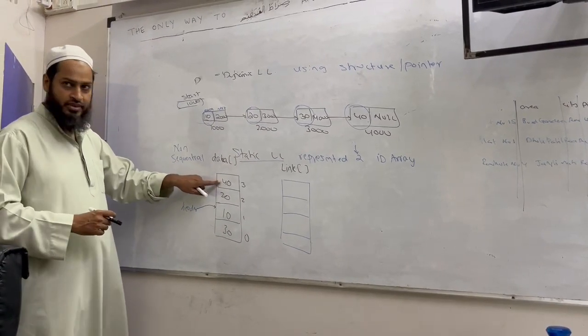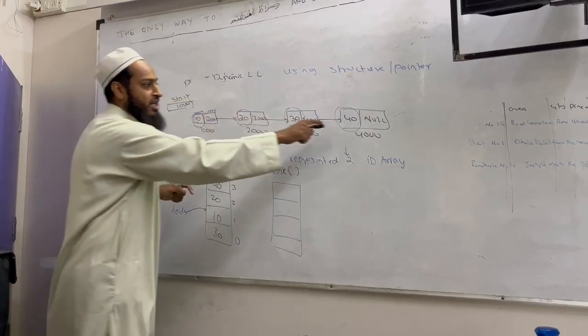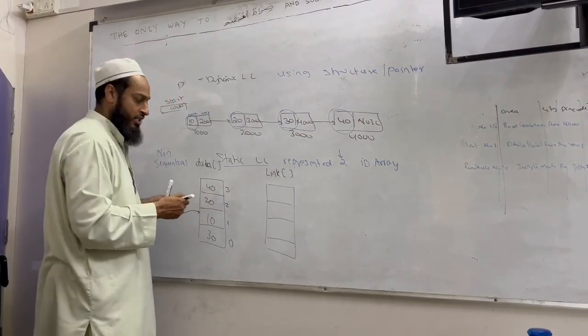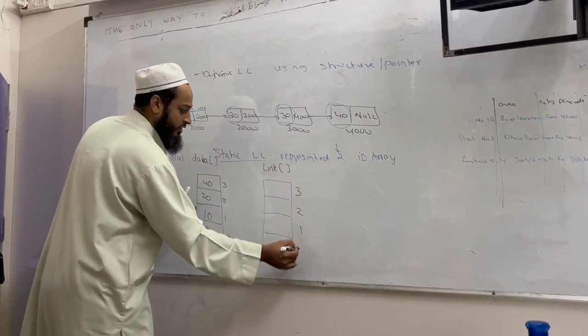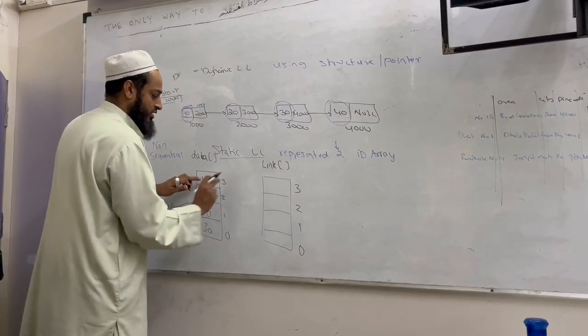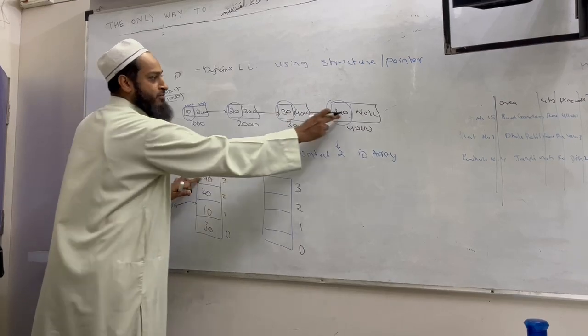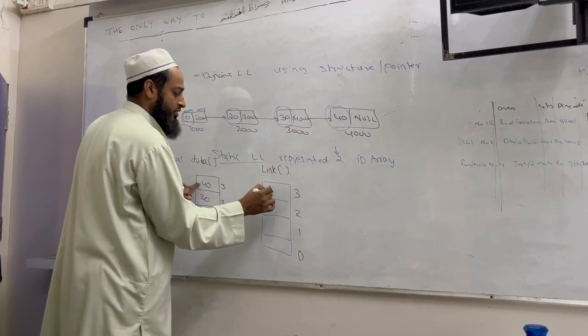Now 40, where is 40 pointing to? Null. So index 3, I mean 40, is pointing to null. So null will come here.